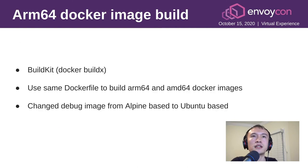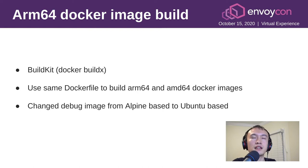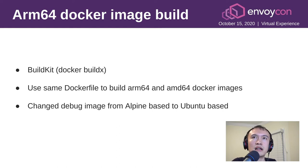The next challenge is the Docker image build. Docker now has multi-arch support with BuildKit. We can use the same Dockerfile to build both ARM64 and AMD64 images. We changed the debug image from Alpine base to Ubuntu base to better support ARM, because the Alpine GCC base image we use doesn't have an ARM version.